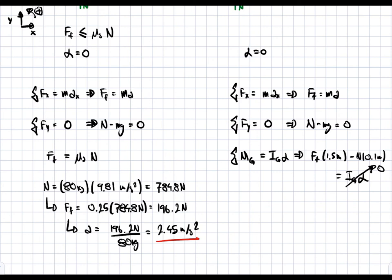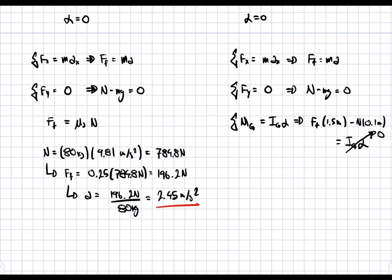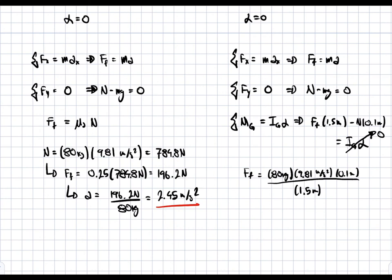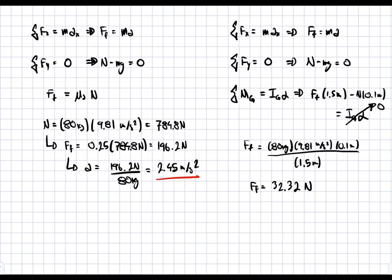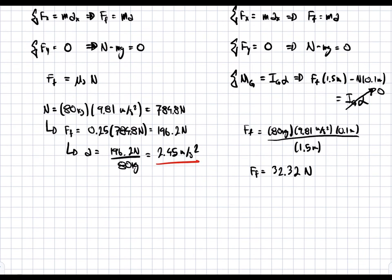Solving the system: from N = mg, we get N = 80 kg × 9.81 m/s². Substituting into the moment equation gives F_friction = (80 × 9.81 × 0.1) / 1.5 = 32.32 N. Dividing by the mass gives the tipping acceleration: a = 32.32 N / 80 kg = 0.65 m/s².